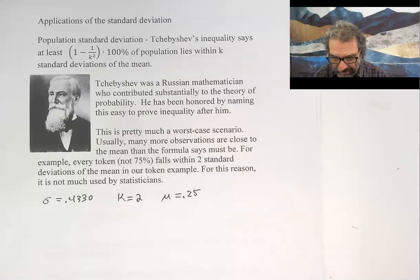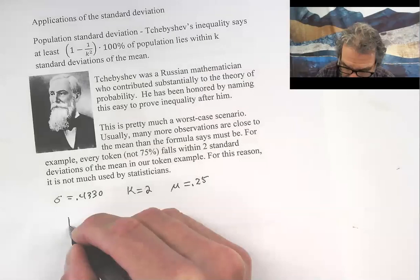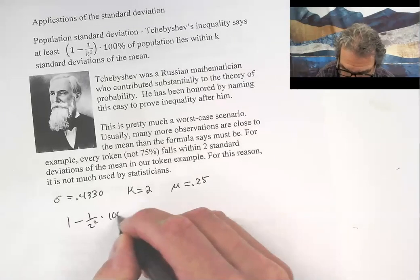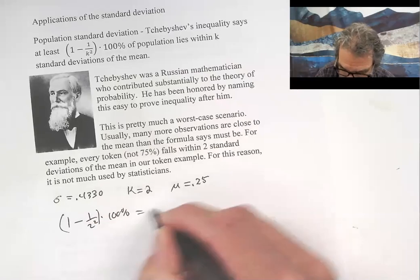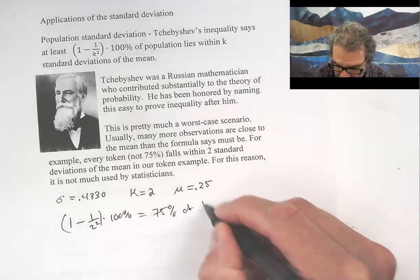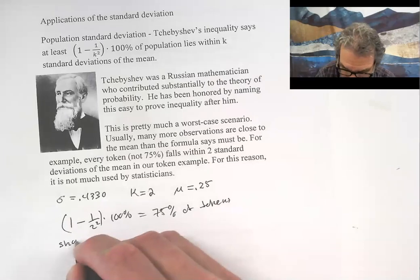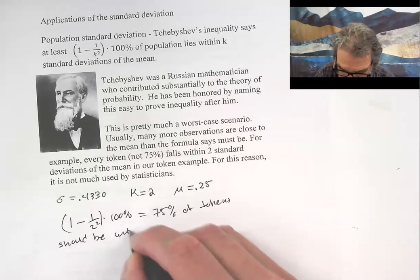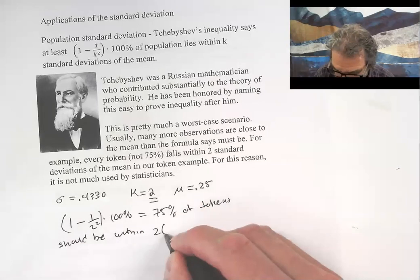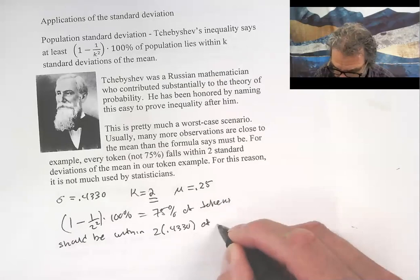We're going to try our example with k = 2, and Chebyshev says that 1 - 1/2² times 100 percent, which is 75 percent of tokens, should be within k = 2, 2 times 0.4330 of 0.25.